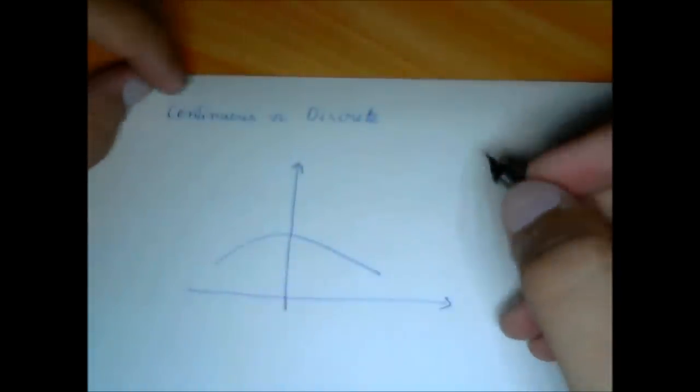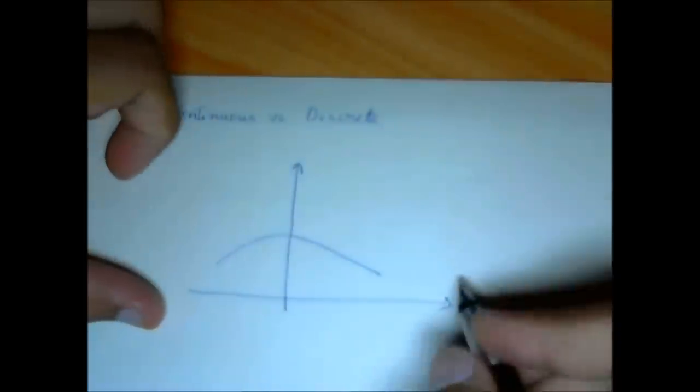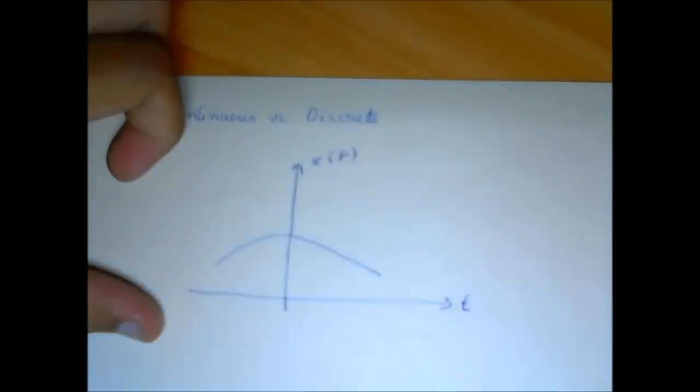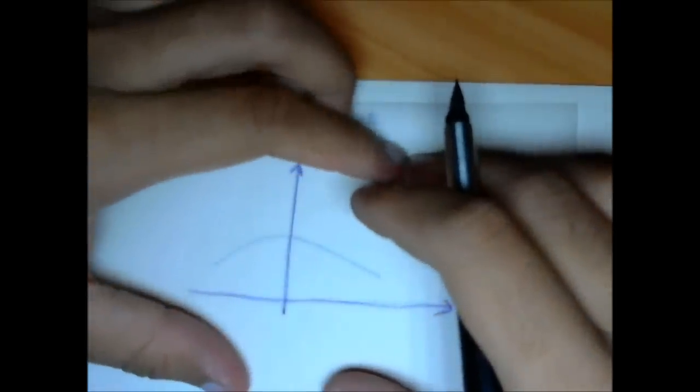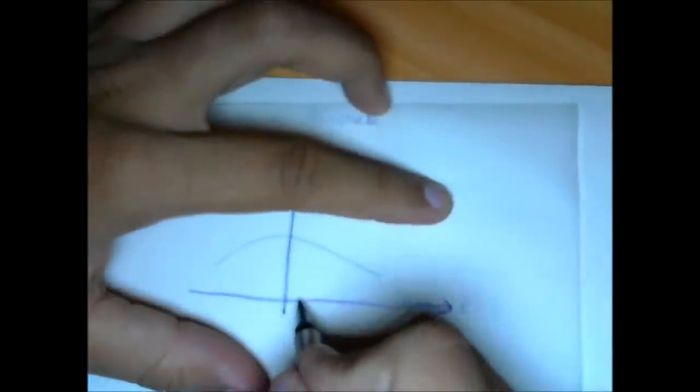Now let's relate the discrete and continuous time signals. So what we have here is a continuous time signal. This is T and this is, let's say, X of T. And we want to find what is the equivalent of X of N. So if I had to draw X of N, what would it look like? What we can actually do is superimpose another set of axes.